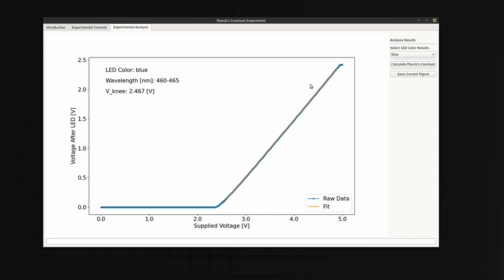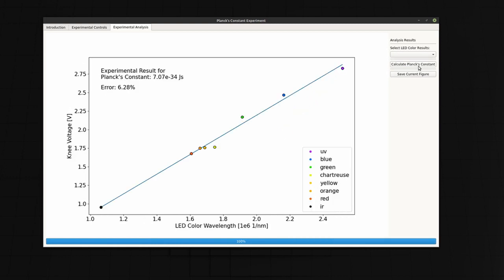To obtain Planck's constant, we just have to click the Calculate Planck's Constant button. This can take a second, as it has to calculate the individual results for each LED. This plot shows the knee voltage for each LED as a function of 1 divided by the LED's wavelength.